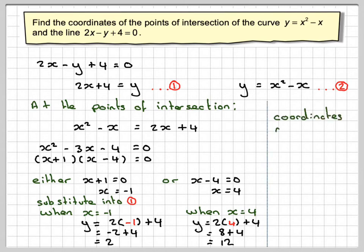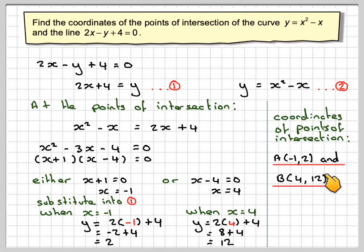So the coordinates of the points of intersection are minus 1, 2, and 4, 12. I only put a and b in here because I'm going to do a graph.